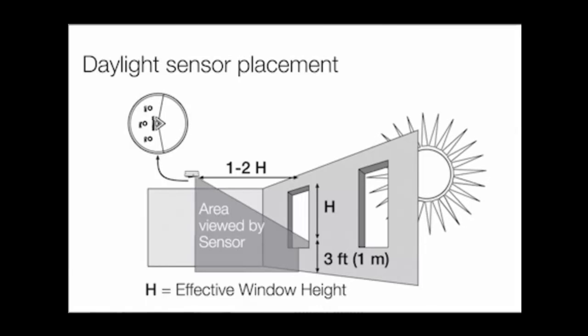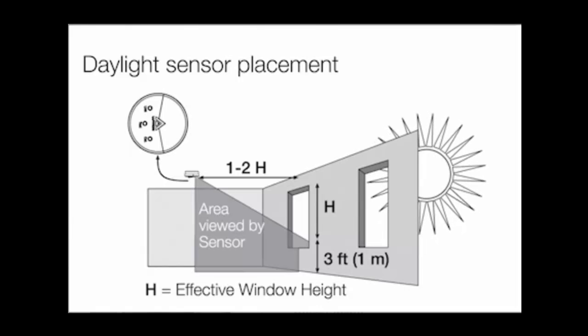For daylight sensor placement, please refer to this diagram, which can be found in the installation instructions document online for the Radio Power Saver daylight sensor.